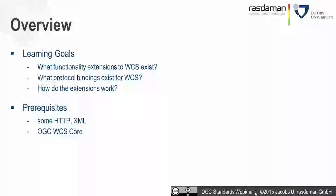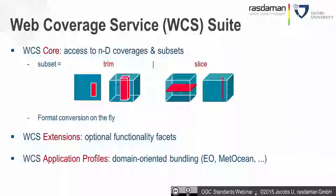As a little refresher, the web coverage service suite is arranged around a WCS core, which is the mandatory functionality that every WCS must support. This core has very focused functionality. It allows accessing n-dimensional coverages and determining subsets of them, whereby a subset can be either trimming or slicing. Trimming maintains dimensionality in the result — so you get a two-dimensional cutout from a two-dimensional image, a three-dimensional cutout from a three-dimensional time series, etc.